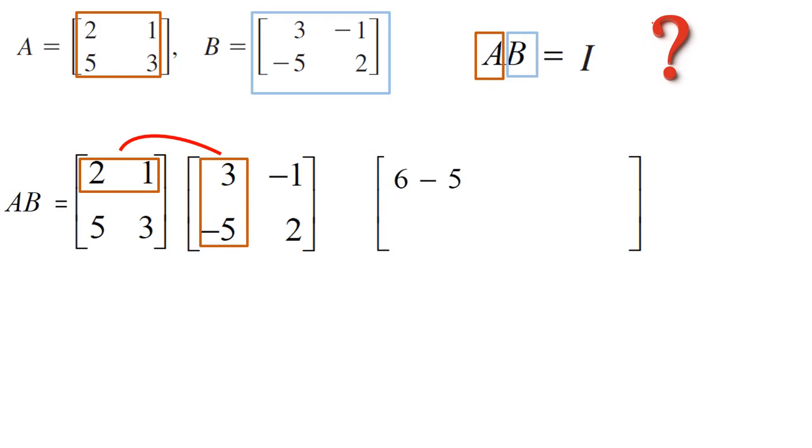The dot product between the first row and the first column gives you 6 minus 5, which is 1. Now let us move on to find the dot product between the first row and the second column, which is negative 2 plus 2, which is 0.